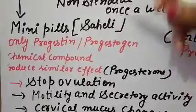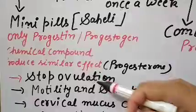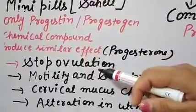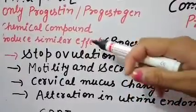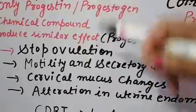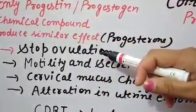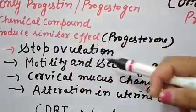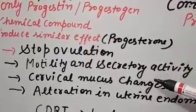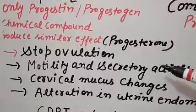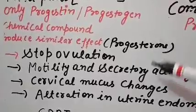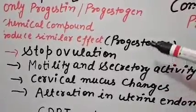What are the effects of these oral pills? First, they stop ovulation — the release of the ovum from the ovary, which is then collected by the fallopian tube. If ovulation does not take place, there will be no fertilization. Next, the motility and secretory activity of the fallopian tube are affected. After ovulation, the ovum is moved through the fallopian tube by the action of cilia.